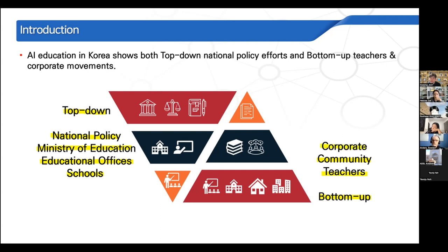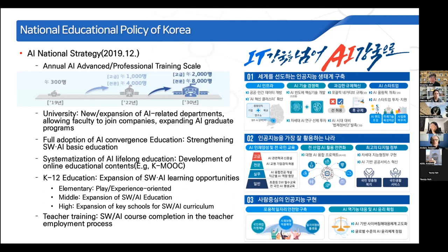Corporations and NGOs also make teaching plans and learning resources for teachers and students. In 2019, AI national strategies were announced through national educational policy. The government announced the AI national strategies to build an AI ecosystem and to improve K-12 education and teacher training to use AI better.